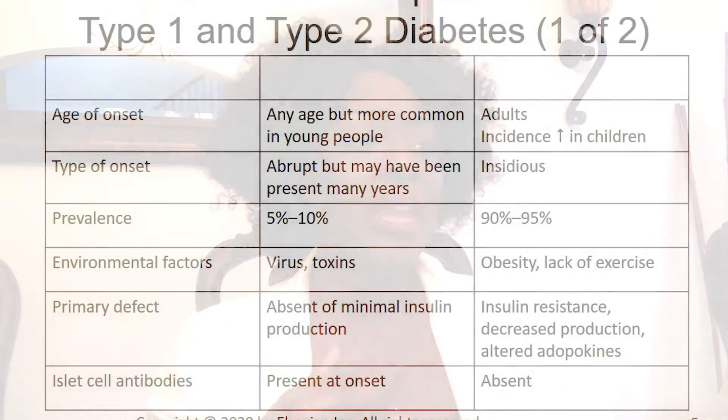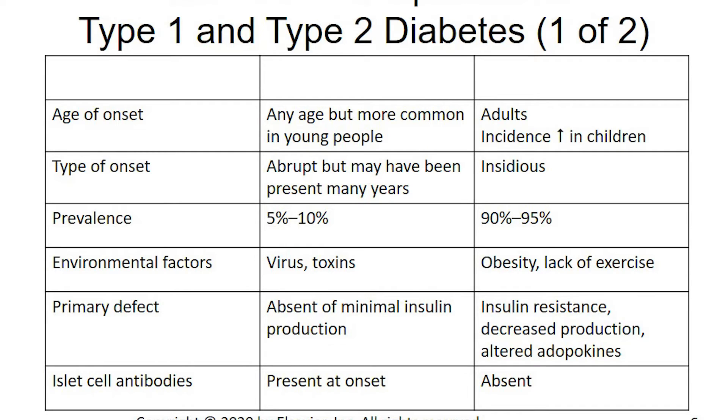Environmental factors are important — I've seen many test questions covering this. For Type 1, it could be viral: a bad viral infection can affect the pancreas and cause Type 1 diabetes. You need to know that inside the pancreas are the islets of Langerhans, which contain your beta cells — and that's where insulin is produced. If a test question mentions a pancreas problem, think diabetes: no insulin production means Type 1.